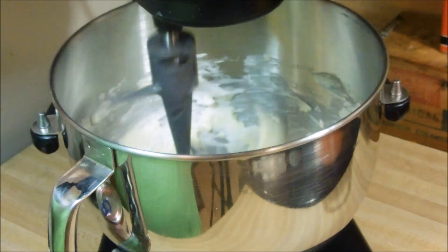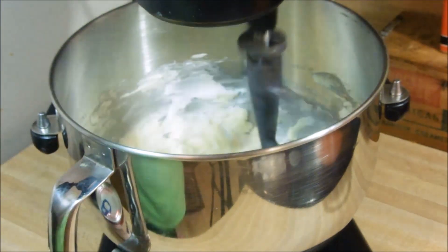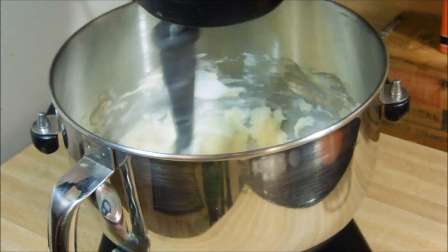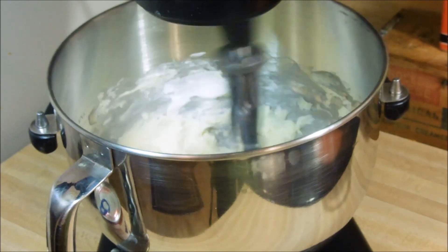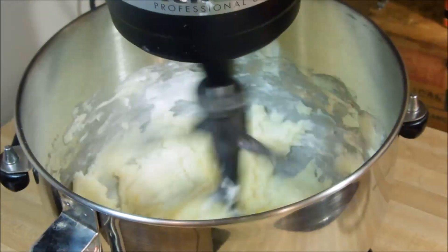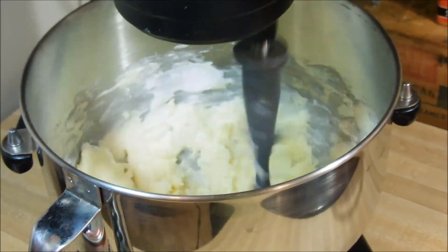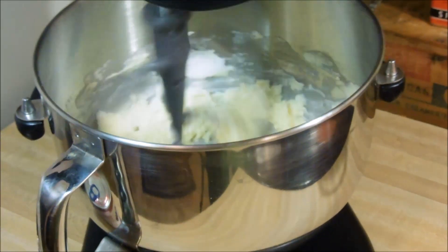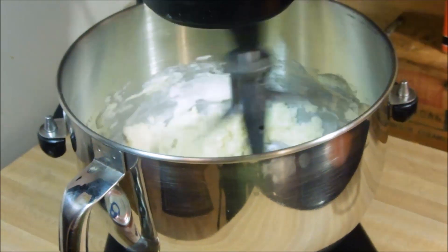When you go to mix in your next ingredient, which will be your chilled sweetened condensed milk, you will need to switch from your paddle attachment to your whisk attachment. You could go ahead and use your hand mixer for all of it, and that would be perfectly fine.